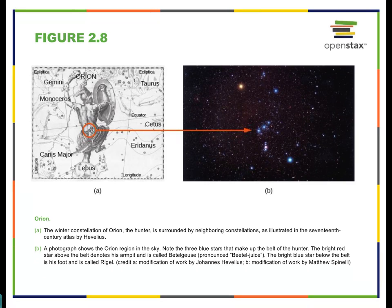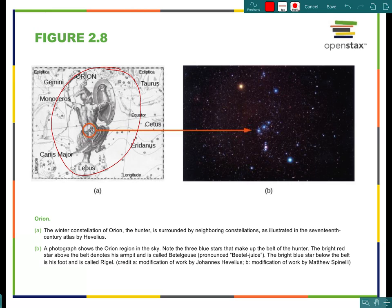Here is an example of a constellation — Orion the Hunter. This shows the pictorial representation alongside the stars you can actually see. Orion is a great one because those three belt stars are so visible. You can refer to the previous slide to figure out what time of year you might see Orion, based on its proximity to something like Gemini.